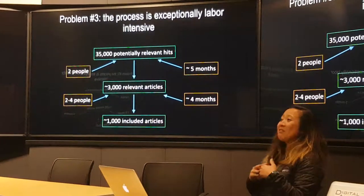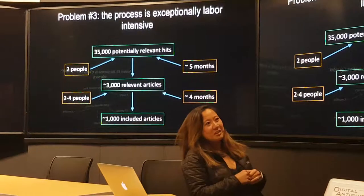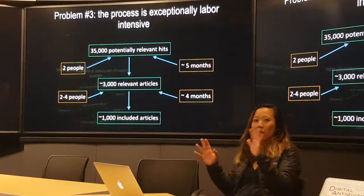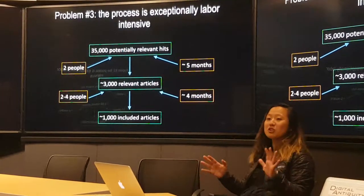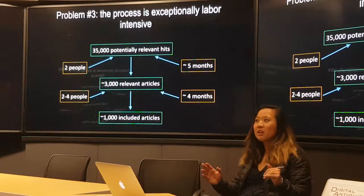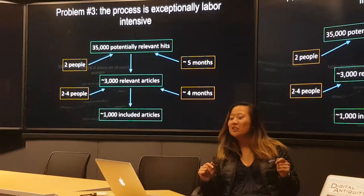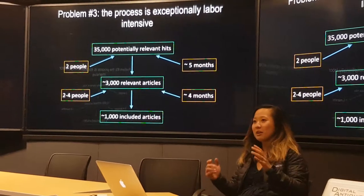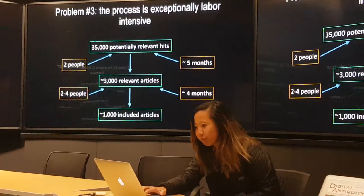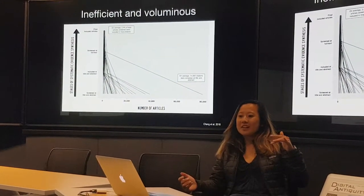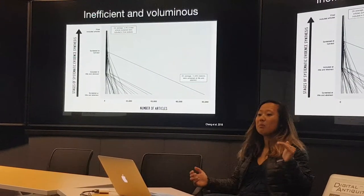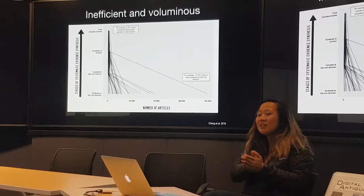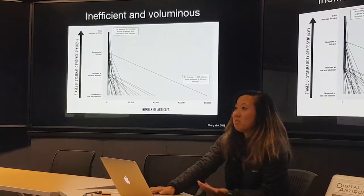The third problem is that this is actually very labor-intensive. We conducted a study looking at the links between nature-based conservation and human well-being — quite a large question. Our initial search turned up 35,000 potentially relevant hits from the academic literature alone. Two of us, with full-time jobs not doing this, went through and read all of them by hand. It took about five months to whittle it down to 3,000 articles, which we then had to read to arrive at 1,000 included articles documenting some linkage between conservation and human well-being. We're not the only ones — on average, only about 2% of total articles people run through are actually included in final analyses. So it's quite inefficient.